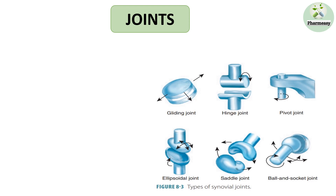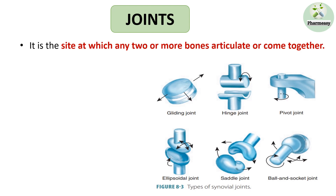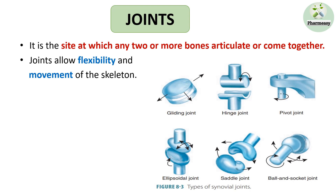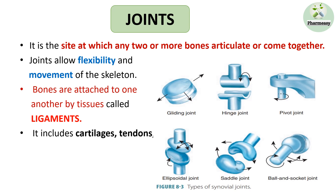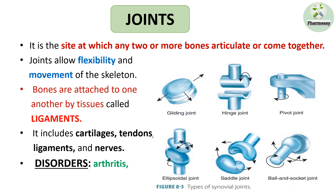Joints are also known as articulations. When two or more bones articulate together, it is known as a joint. These joints play a very vital role in flexibility and movement of the skeleton. Bones are attached to one another by tissues called ligaments. Joints include cartilage, tendons, ligaments, and nerves. This figure shows different types of joints such as gliding joint, hinge joint, pivot joint, ellipsoidal joint, saddle joint, and ball and socket joint. There are many joint-related disorders such as arthritis, osteoporosis, bursitis, and many more.